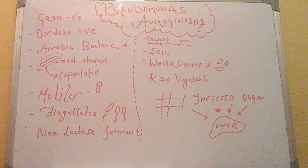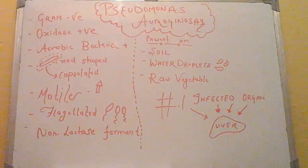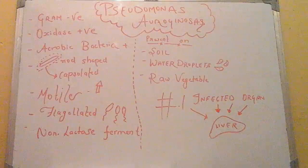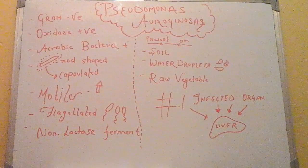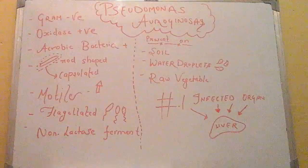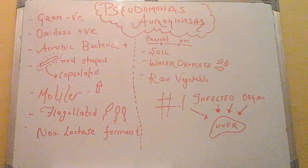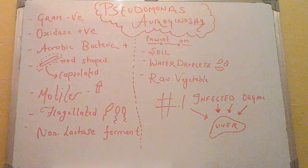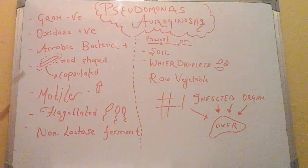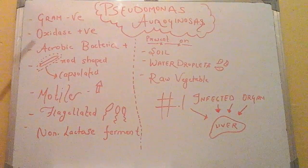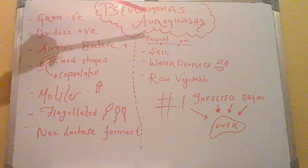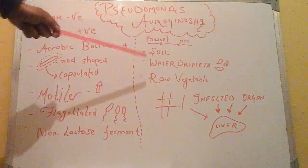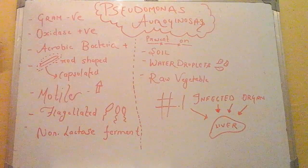Hello friends, today we are going to talk about Pseudomonas aeruginosa. This is a topic of microbiology. The problems which students commonly encounter are the important characteristics of bacteria, and apart from this, which organs or systems they are infecting — these are the most common questions which arise in medical examinations. This is the first part of my topic on Pseudomonas aeruginosa, where we are going to talk about only its characteristics and where Pseudomonas aeruginosa bacteria are present.